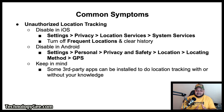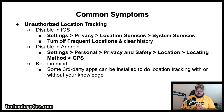To prevent unauthorized location tracking on iOS, go to Settings > Privacy > Location Services > System Services, then turn off Frequent Locations and clear the history. On Android, go to Settings > Personal > Privacy and Safety > Location > Location Method and GPS. Keep in mind there are also third-party apps that can perform location tracking without the device user's authorization.